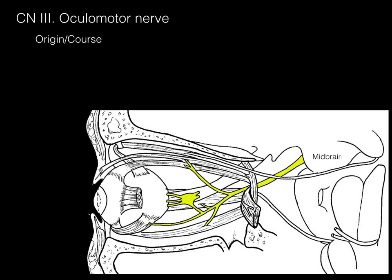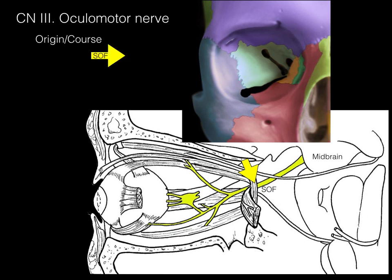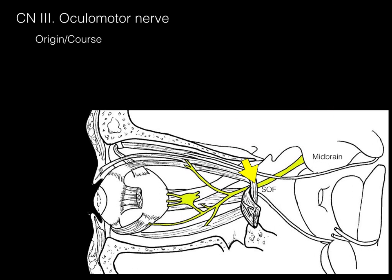The oculomotor nerve arises from the midbrain — as does cranial nerve 4 — and then courses to an opening in the skull known as the superior orbital fissure, abbreviated SOF. The superior orbital fissure is up on the upper part of the orbit; it's a large opening because many cranial nerves course through it. Cranial nerve 3 then courses from the superior orbital fissure into the orbit, where it innervates the extraocular muscles of the eye.